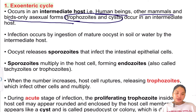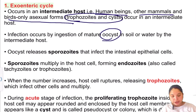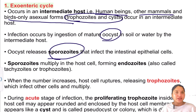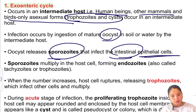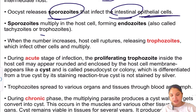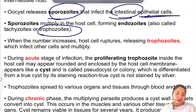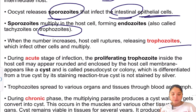In the exoenteric cycle, infection occurs by ingestion of mature oocysts from contaminated soil and water. The oocysts release sporozoites, which infect the intestinal epithelial cells. The sporozoites multiply inside host cells and convert into trophozoites. When the number increases, the host cell ruptures, especially during the acute stage of infection.